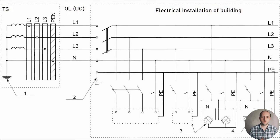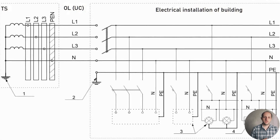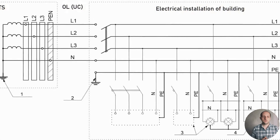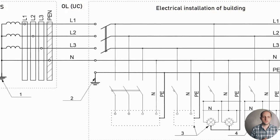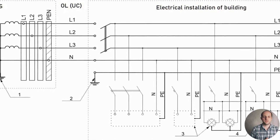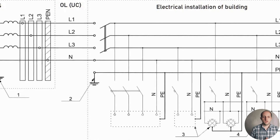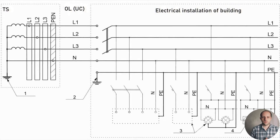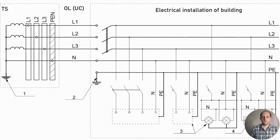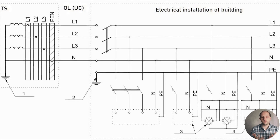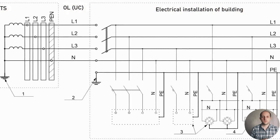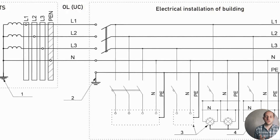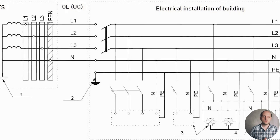With the TT type of system earthing, the protective conductors of the electrical installation of a building do not have the same electrical connection to the earthed neutral of the power supply as in the TN-S or TN-CS systems. When connecting a building's electrical installation to an existing distribution network with TT earthing, it is very difficult in densely built-up urban areas to make electrically independent earth electrodes.